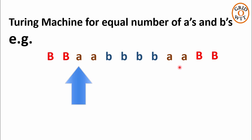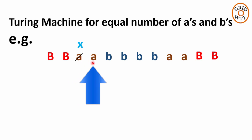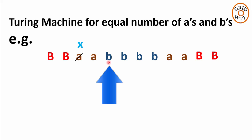Now reading from the left, the Turing machine will delete the first A and replace it with X. Now to delete in pairs, the Turing machine will search for B. This symbol B will be deleted and replaced with X. Because one pair of AB is deleted, the first iteration is completed.